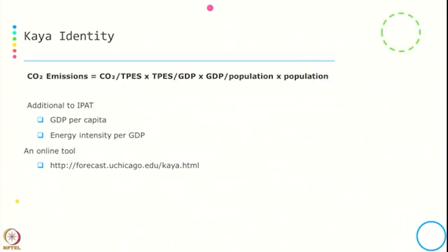Getting into the equation, CO2 emission equals total population multiplied by GDP per population, multiplied by energy consumption per GDP, multiplied by the carbon content per unit of energy. What is additional in this equation compared to IPAT? Apart from population, affluence, and technology, we are also specifically considering GDP per capita and energy intensity per GDP. There is also an online tool available which can be used to calculate the Kaya Identity.